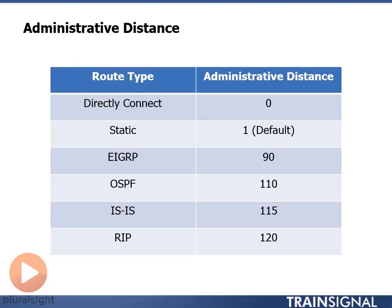Let's look at an example. Let's say we have a route to network 10.0.0.0/24, and we learned about it in three ways: through EIGRP, through OSPF, and through RIP. We've learned about network 10.0.0.0/24 through three ways — the EIGRP route is going to get added to the routing table.